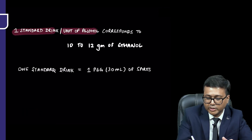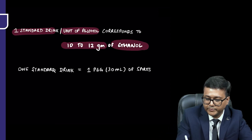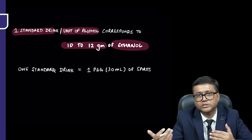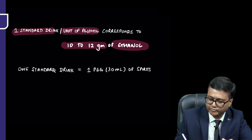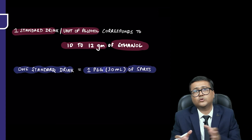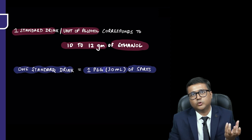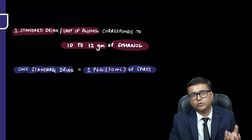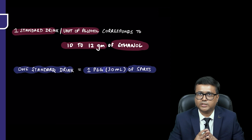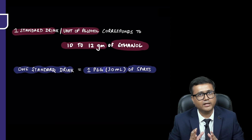One standard drink or one unit of alcohol corresponds to 10 to 12 grams of ethanol. To give a rough idea, one standard drink equals one peg, which is 30 ml of spirits. When you ask how many pegs of alcohol a patient is consuming, you can calculate how much ethanol in standard drinks they are consuming in total.